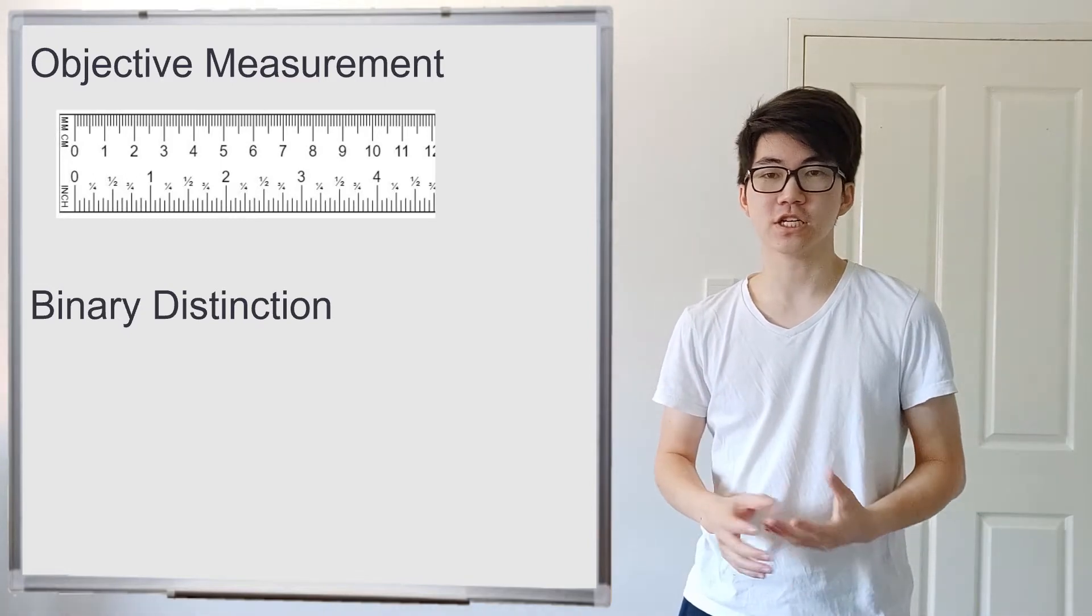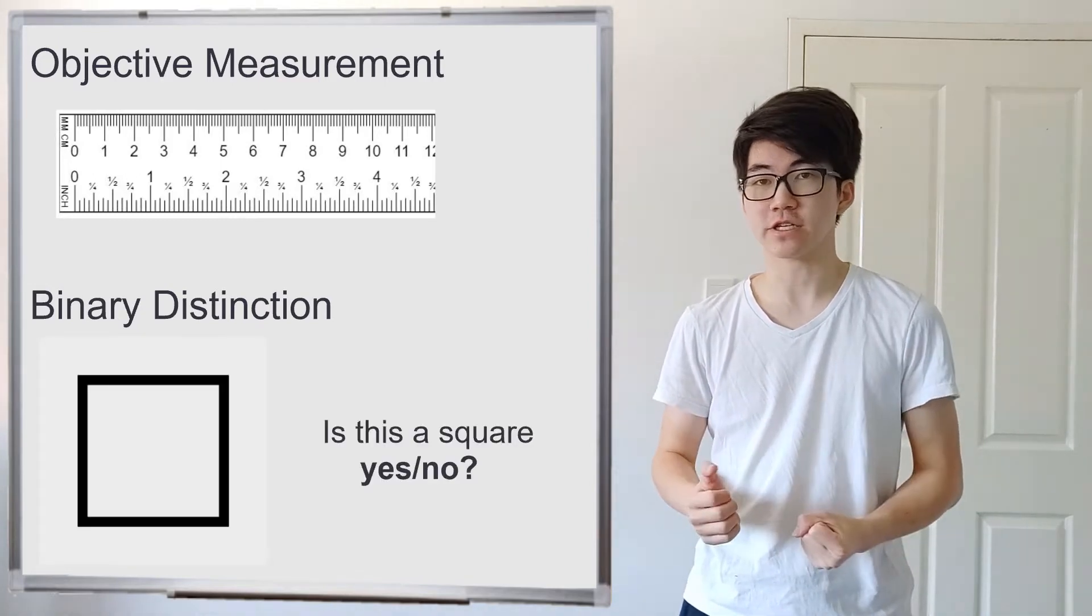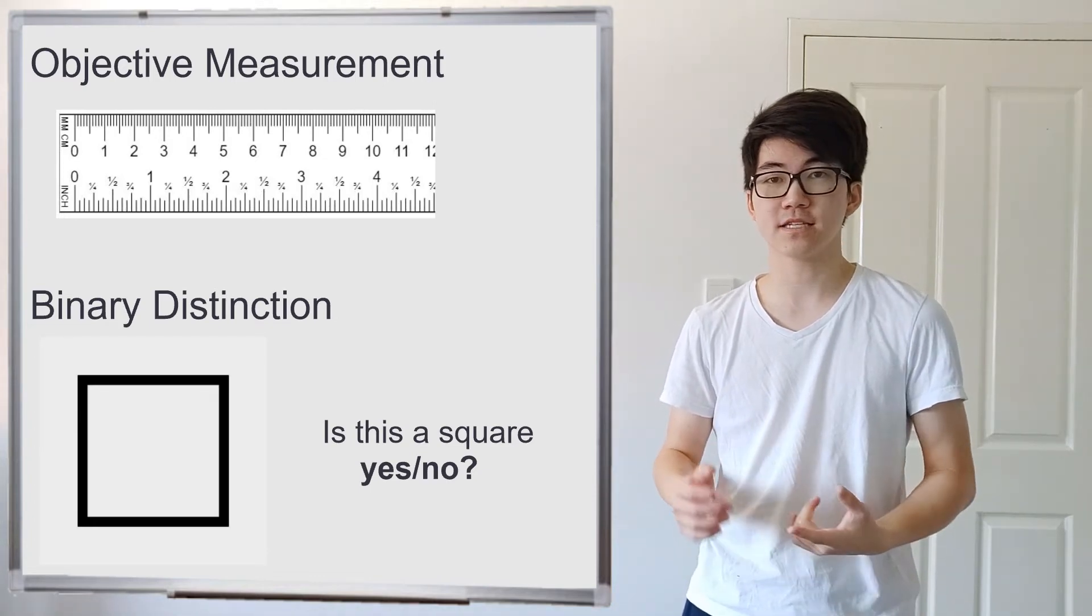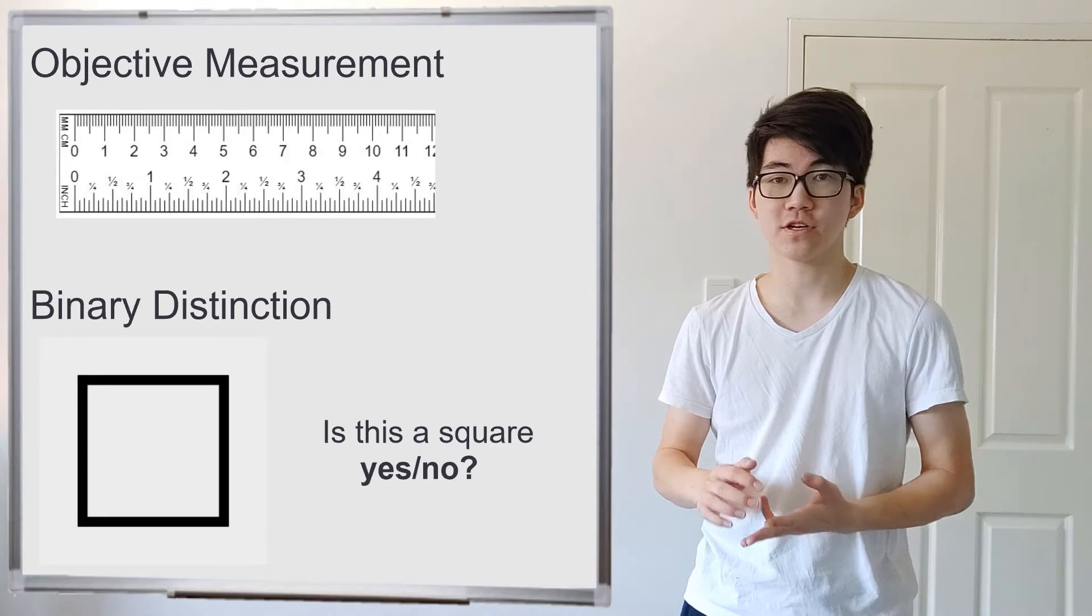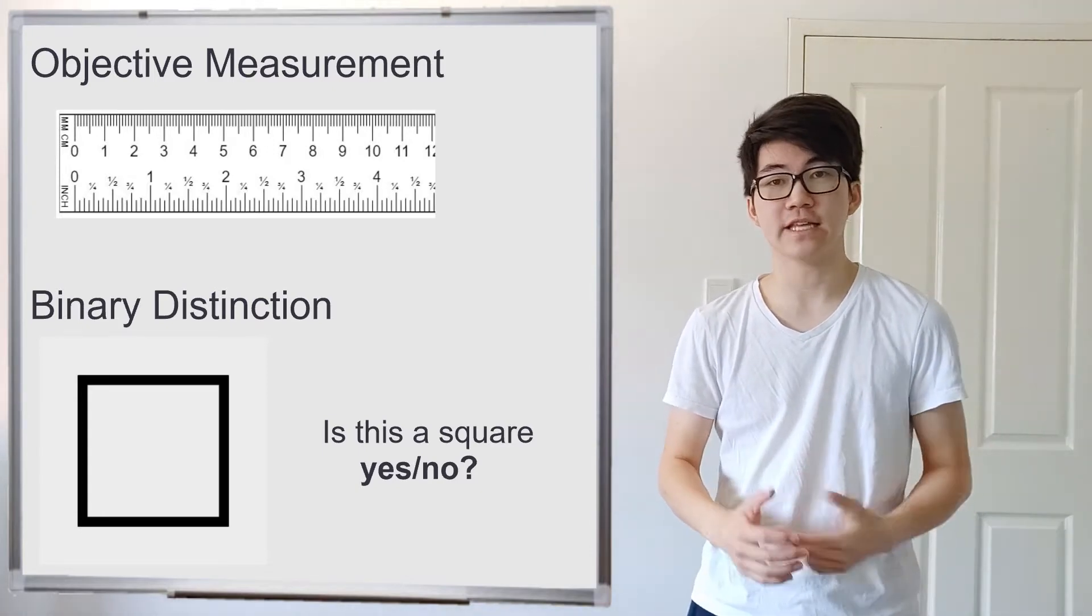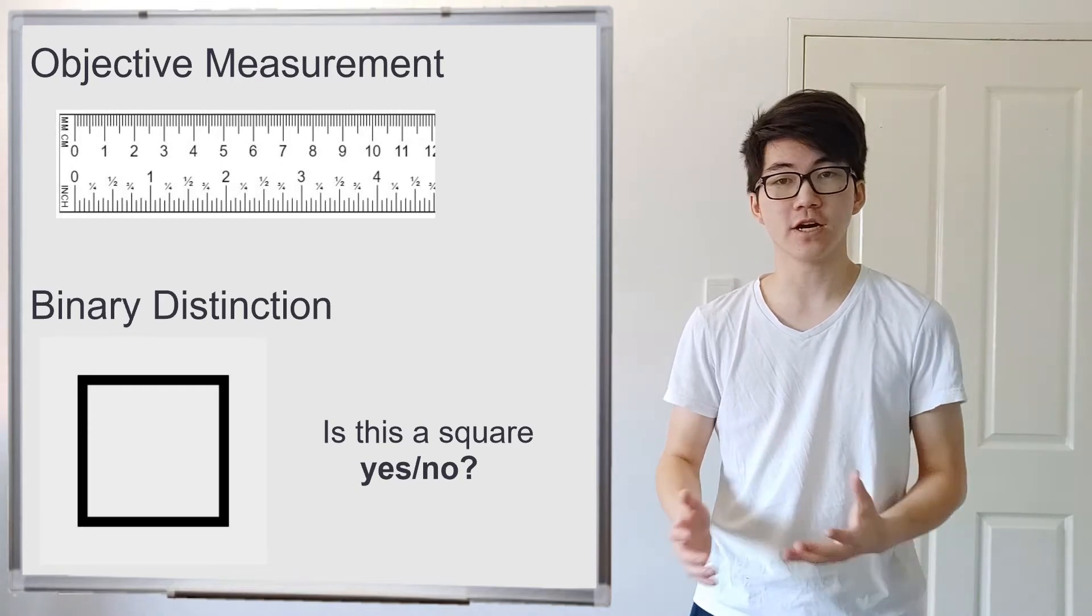A binary distinction would be something like a yes or no question. Is this shape a square? Does it have four equal sides that are straight and also four right angles? Either yes it does or no it doesn't. It's either a square or it's not and there's nothing in between.